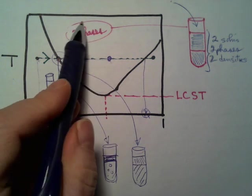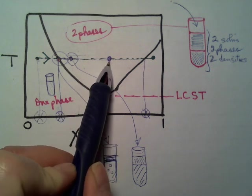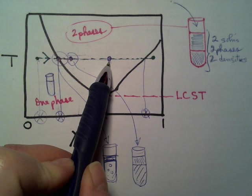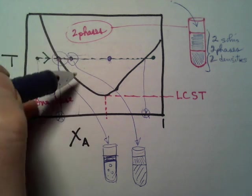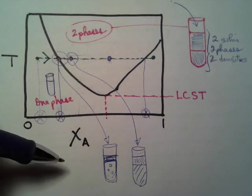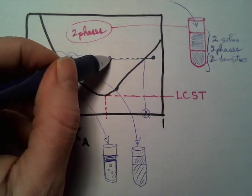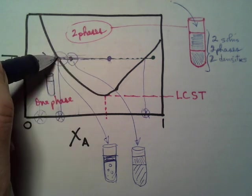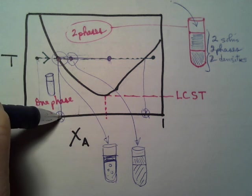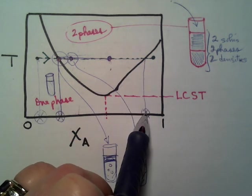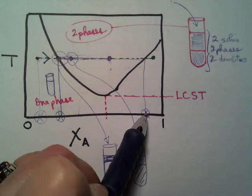I still have, I'm in my two-phase region. I still have two solutions. But what's changing is the composition of each of those solutions. Or is it? Well, let's see. I'm here. Where does my tie line bring me? Ah, same composition. This tie line. Still the same composition. How is that possible?